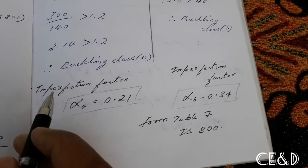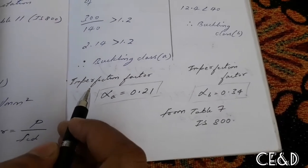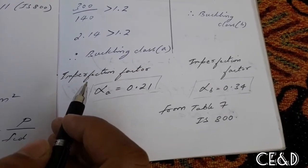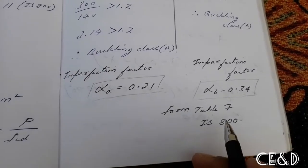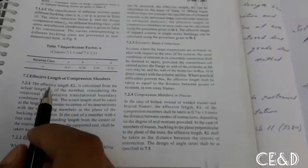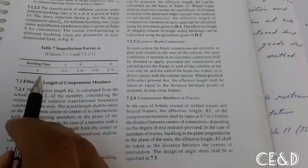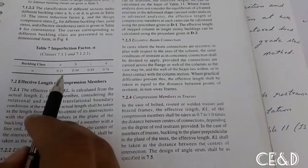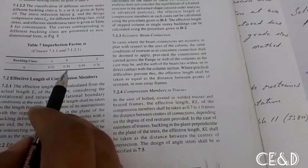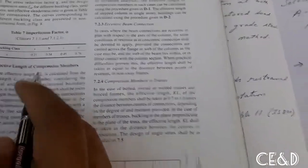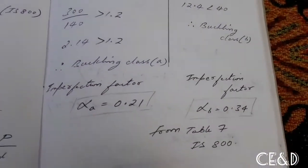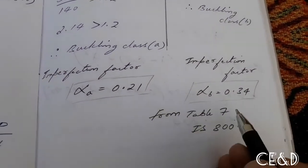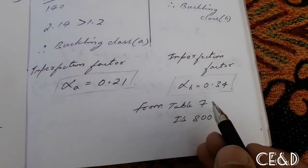The imperfection factor alpha is taken from Table 7 of IS 800. Alpha A = 0.21 and Alpha B = 0.34. Since we proceed with buckling class B, use alpha B = 0.34.